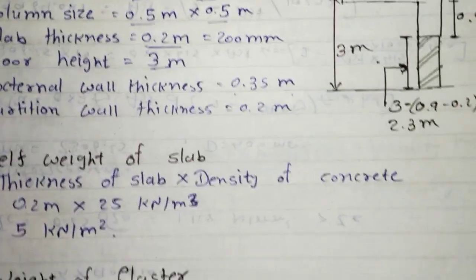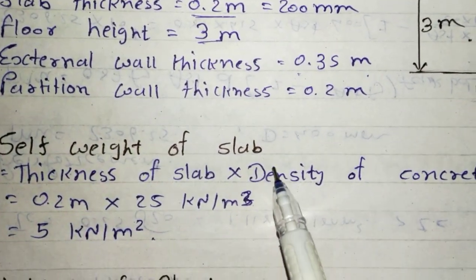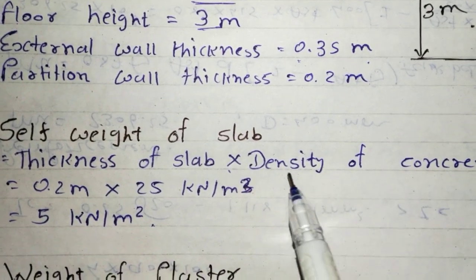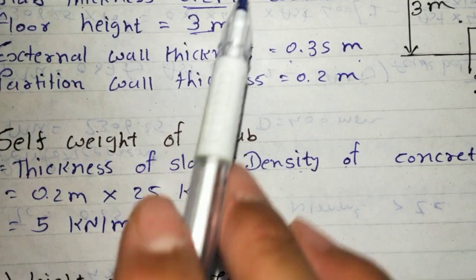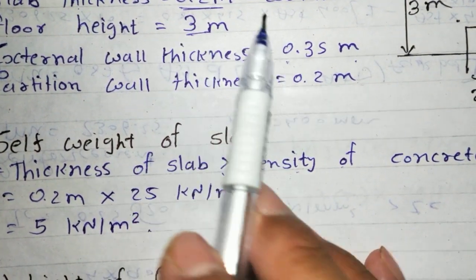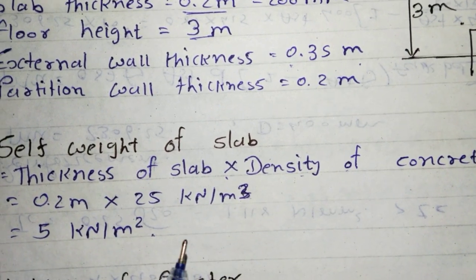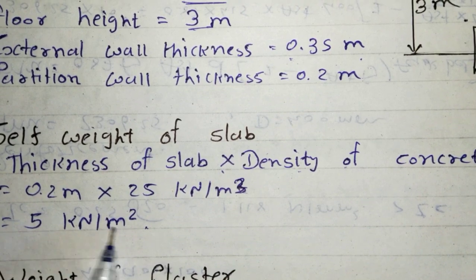So first of all we will find self weight of slab. Basically self weight of slab is multiplication of thickness of slab multiply density of concrete. Thickness of slab is 0.2 meter into density of concrete is 25 kilo Newton per meter cube. So self weight of slab is equal to 5 kilo Newton per meter square.